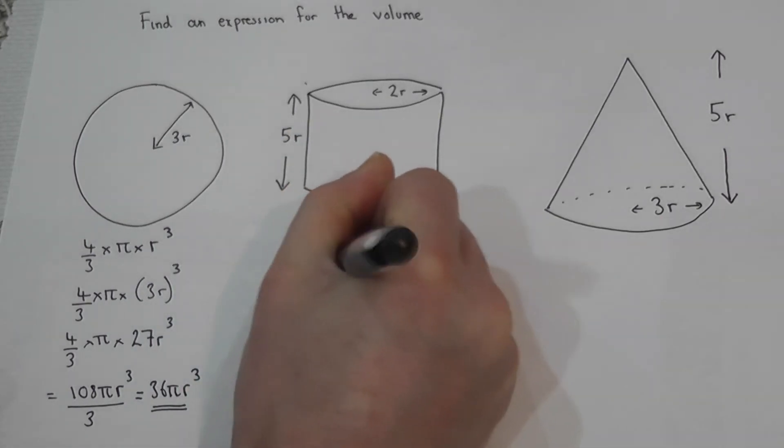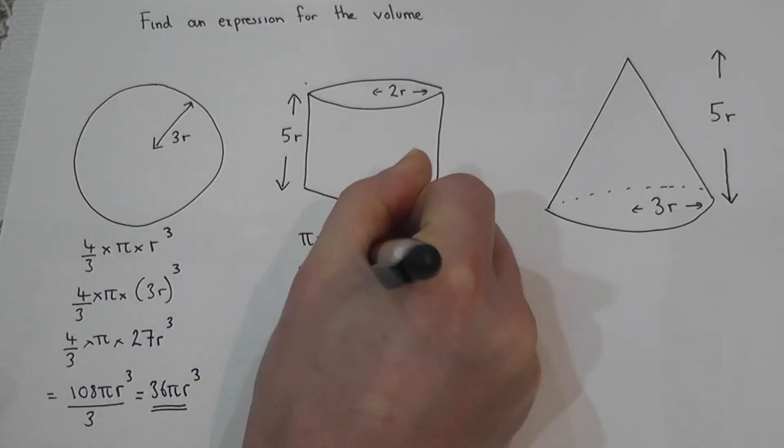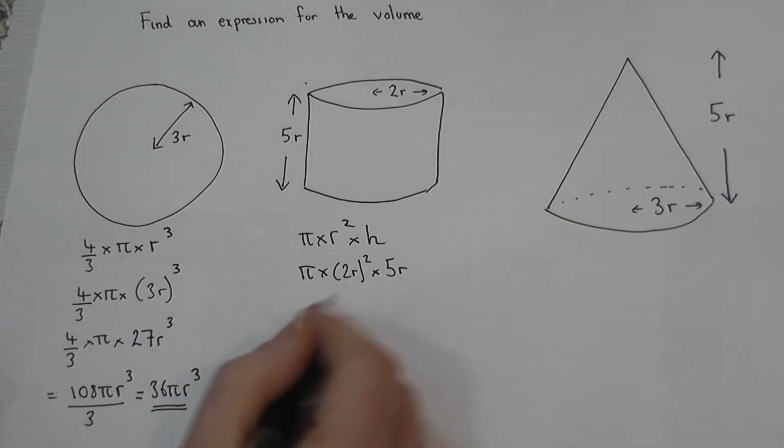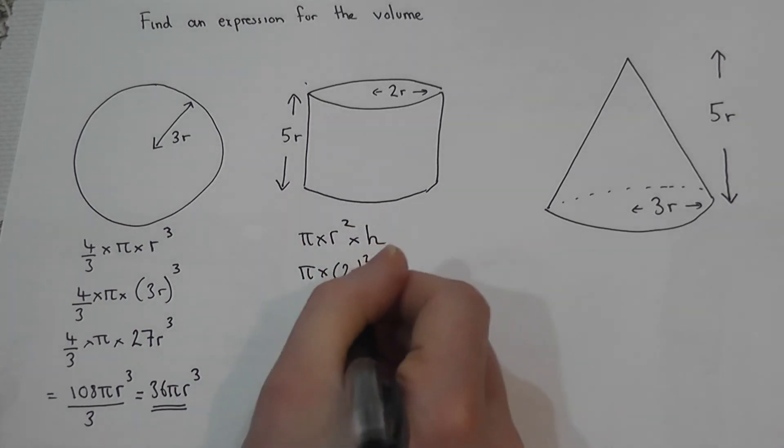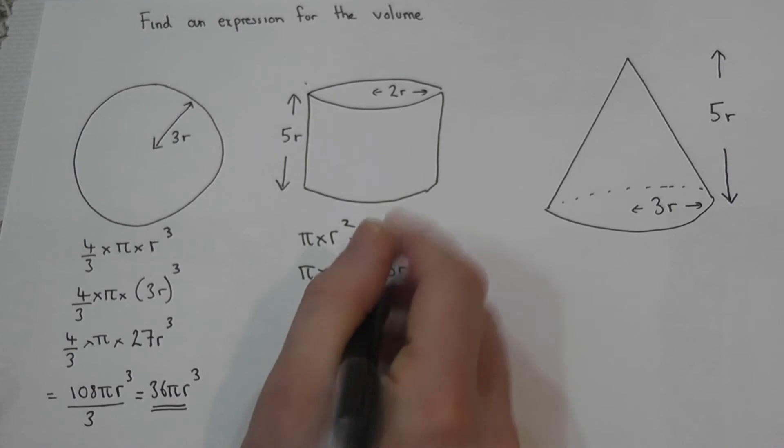So this becomes pi times by the radius squared times by the height. And as before we always try to do the brackets first. So 2r squared, 2 squared is 4, r squared is r squared, 4r squared.